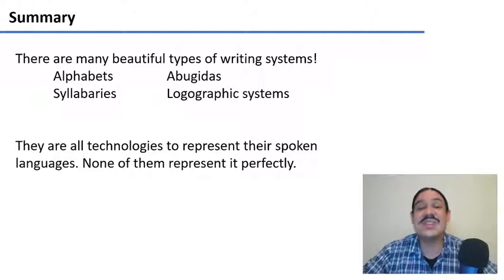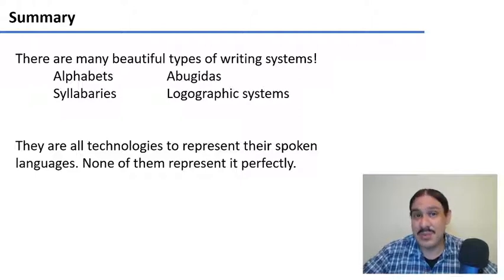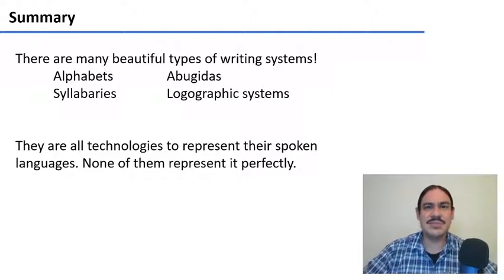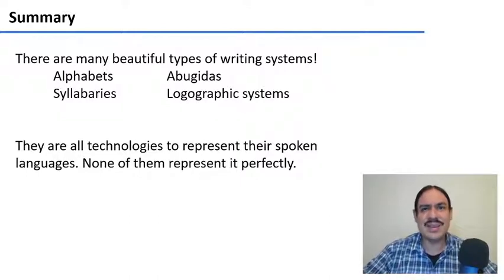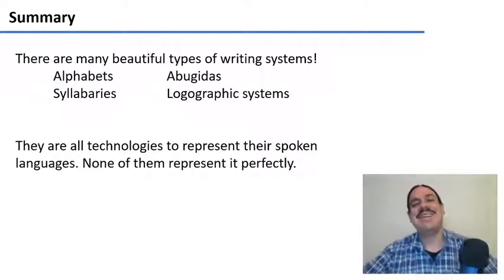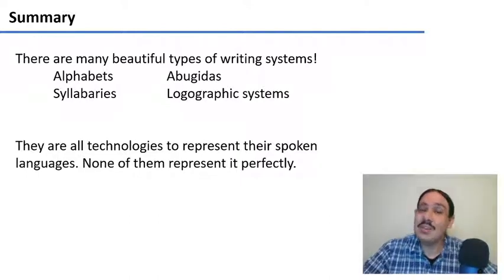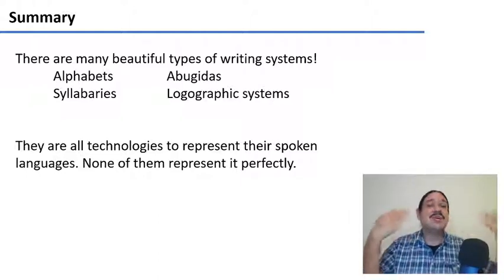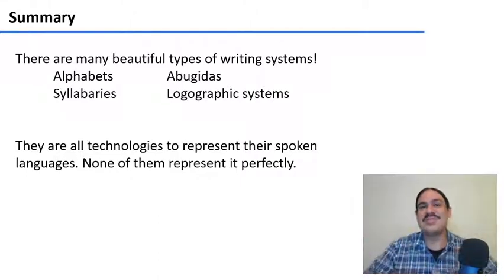These are some of the ways in which the writing systems of the world operate. They are all technologies meant to represent language. None of them are perfect — all of them have problems, for example with writing prosody, like distinguishing the difference between 'really' said neutrally and with emphasis. But they do a fairly good job of representing the sounds and reminding you of the words in your language.